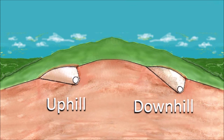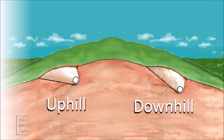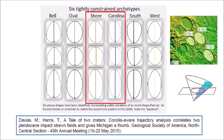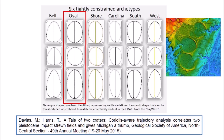This image represents a cross-section of a hillside with penetration funnels on the uphill side and on the downhill side. In 2015, Davias and Harris described six basic templates or archetypes that could be used to characterize the shape of Carolina Bays. The Shore or Carolina archetypes describe bays whose geometry is very close to mathematical ellipses, found from Virginia to South Carolina. Since ellipses are conic sections, these bays most likely originated as inclined conical cavities or penetration funnels.